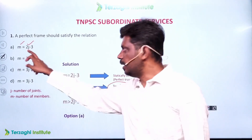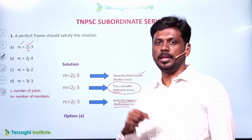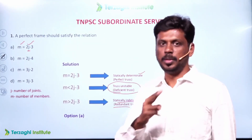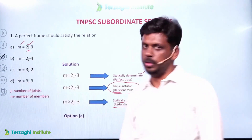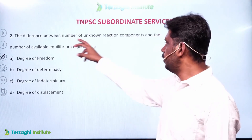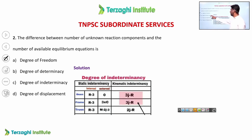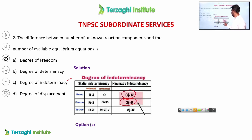At each joint, the number of unknown forces is 2. The difference between the number of unknown reaction components and the number of available equilibrium equations is the degree of indeterminacy. For a beam it is 3j - r, for a frame it is 3j - r, and for a truss it is 2j - r.